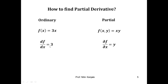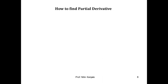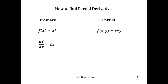It is the same way we get 3 in the case of ordinary differentiation. Similarly, if we find ∂f/∂y by treating x as constant, then ∂f/∂y is just x. Let us see another example: let f(x) = x², then the derivative with respect to x is 2x. For a function of two variables, let f(x, y) = x²y, then ∂f/∂x treating y as constant will be 2xy.